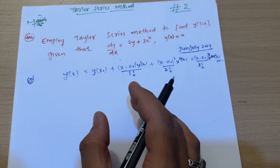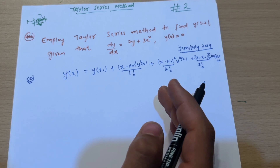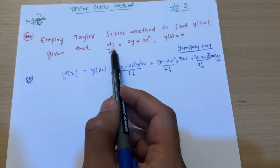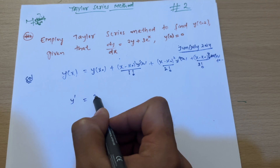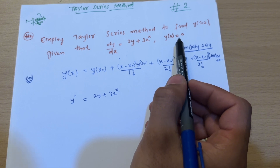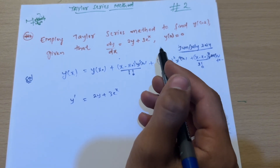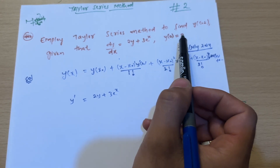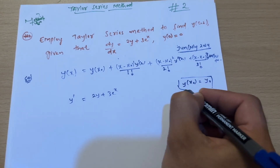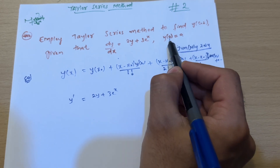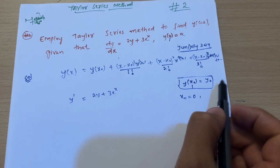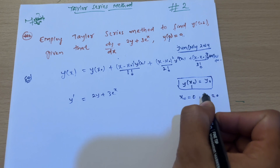You don't need to memorize this formula — as I told you in the previous lecture, this series expansion will be given in your data handbook. Now the given problem is: dy/dx = y' = 2y + 3eˣ, with initial condition y(0) = 0. This means x₀ = 0 and y₀ = 0. Make a box for these two values.